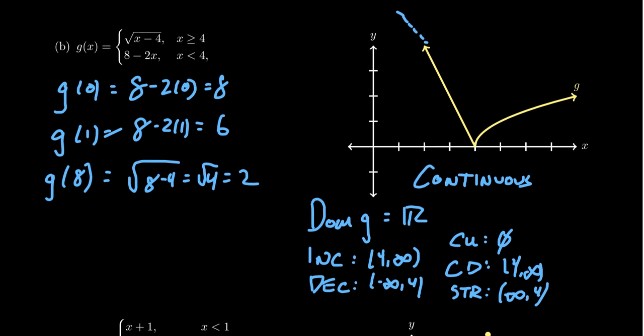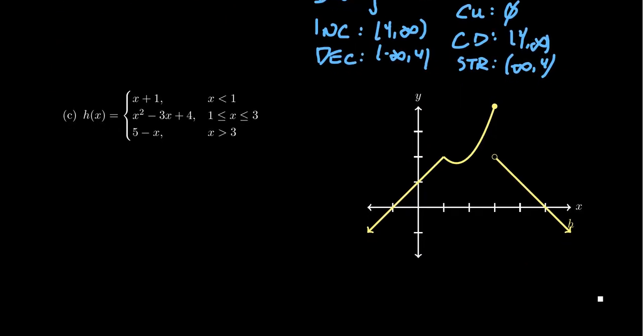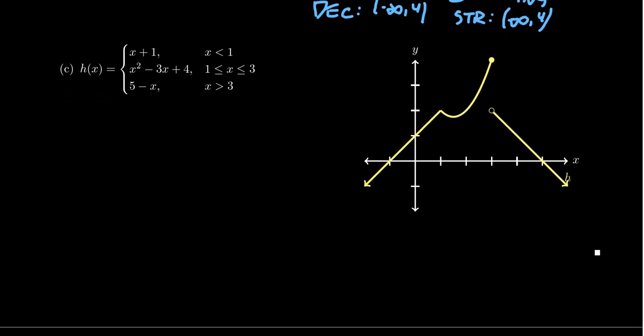Let's do one more example of these piecewise functions. This one's sort of an interesting creature. We have three different pieces here. When x is less than 1, we will look like the line x plus 1. When we're between 1 and 3 inclusive, it'll look like the parabola x squared minus 3x plus 4. And then finally, when x is greater than 3, it'll look like the line 5 minus x.